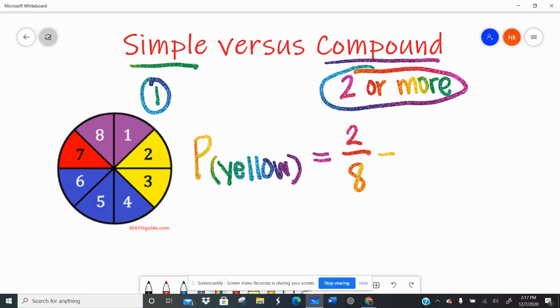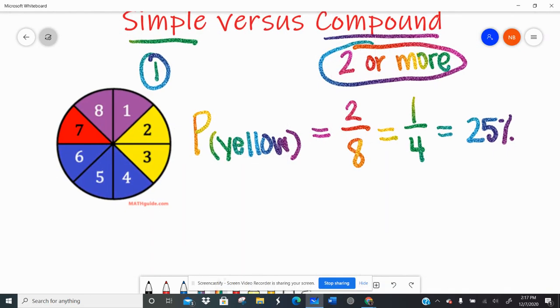I can also simplify that by saying, okay, well, two eighths is the same as one fourth. Or I could write that out as a percent. I have a twenty-five percent chance of landing on yellow.